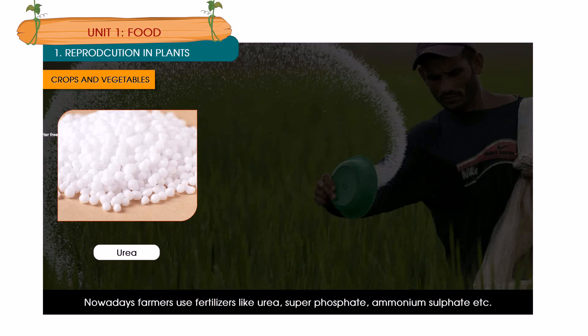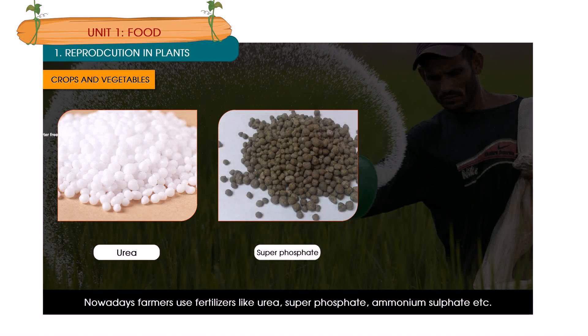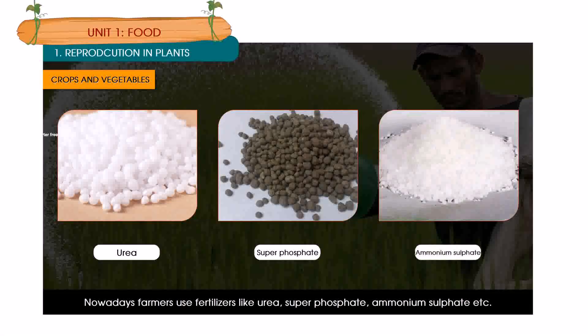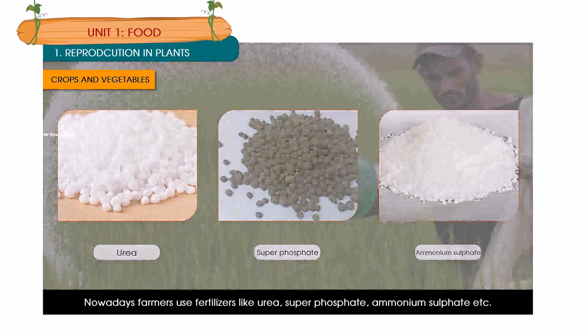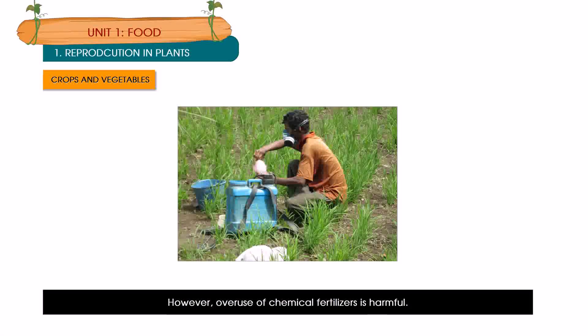Manure is added to the soil to increase produce. Nowadays, farmers use fertilizers like urea, superphosphate, ammonium sulfate, etc. However, overuse of chemical fertilizers is harmful.